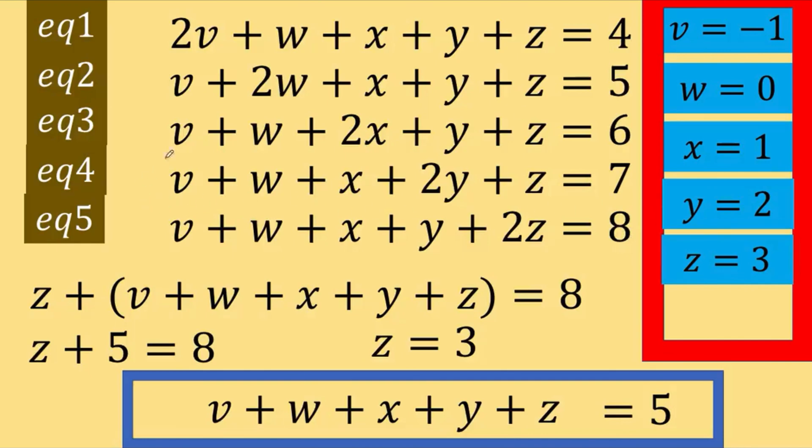If v equals negative 1, this is negative 1, w is 0, x is 1. So, this becomes 2 times 1, which is 2, y is 2, and z equals 3. We can add negative 1 plus 0 is negative 1. Negative 1 plus 2 is positive 1. Positive 1 plus 2 is positive 3. 3 plus 3 equals 6, which is correct.